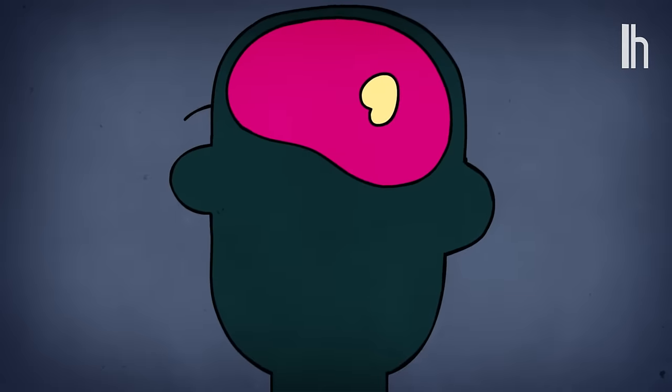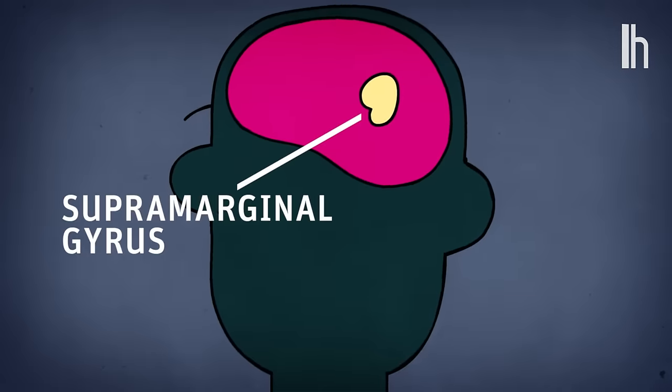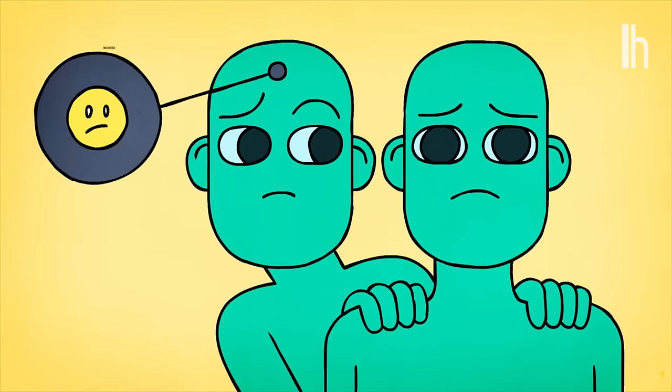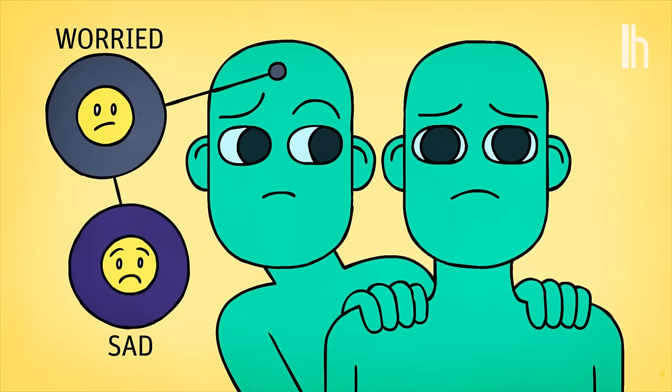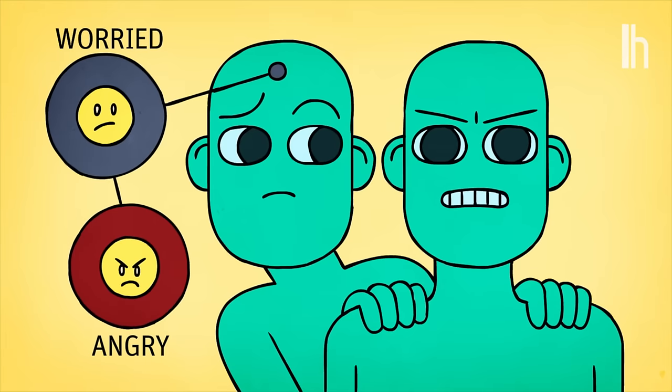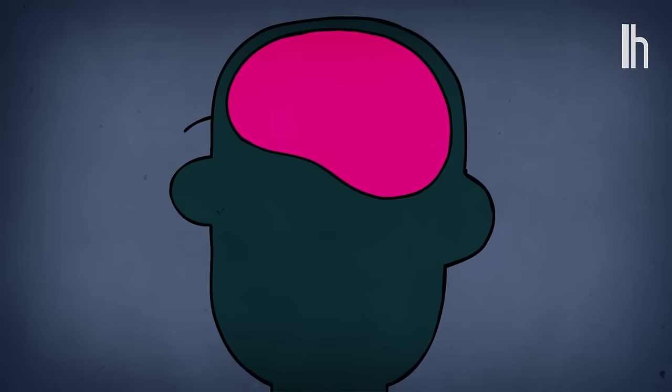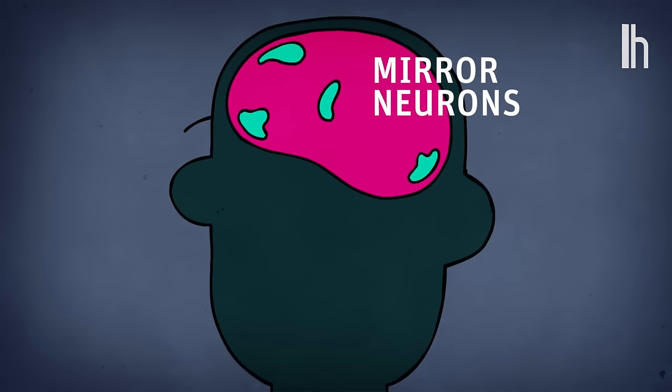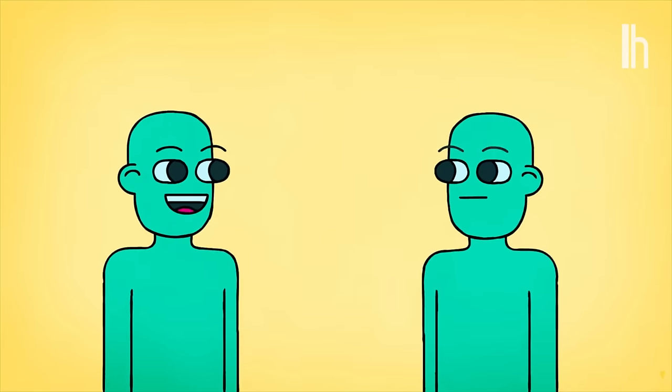One area that assists in this process is the right supermarginal gyrus, which helps us to distinguish our own emotional state from that of another person, and plays a key role in our ability to observe and assess what other people are experiencing. Studies from Neuroscience Journal suggest that we have systems of mirror neurons in our brains that cause us to mimic the actions of others.